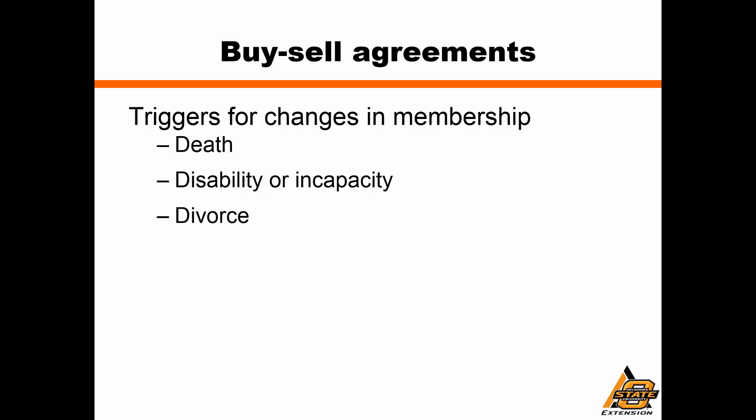The same could also be true for someone who comes under a disability or incapacity — if they simply cannot continue as a member of the business entity, that may be an opportunity to divest membership with that person. Divorce is also commonly used as a trigger in buy-sell agreements. Bankruptcy or foreclosure is another trigger — if someone has used their share of the business as collateral for a loan, it may be very important for the entity to buy back that collateral, because otherwise a lending institution could foreclose and the bank becomes a member of the business.